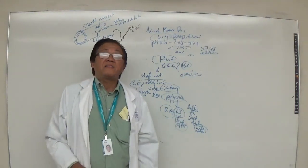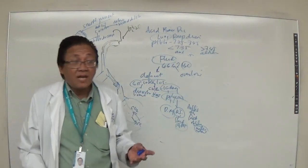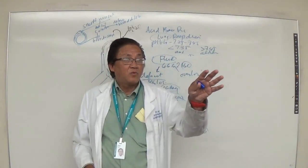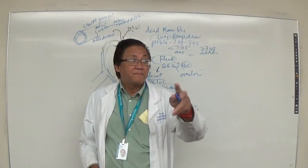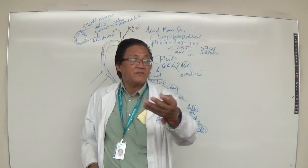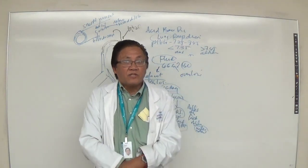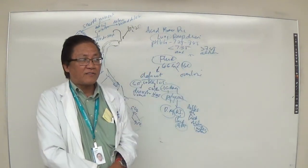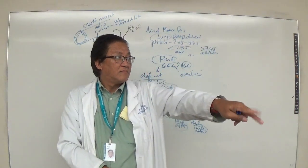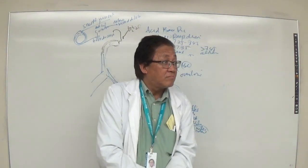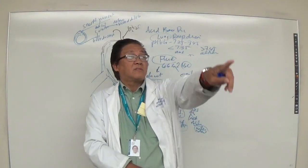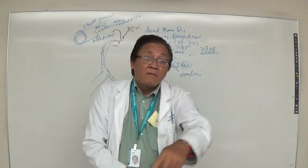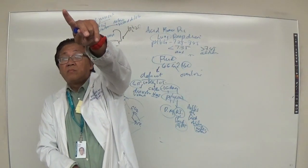Addison's disease involves a lack of aldosterone. Aldosterone promotes water retention — if you lack it, you have polyuria and can develop hypovolemic shock — called an Addisonian crisis. The opposite of Addison's is Cushing's disease, which involves high levels of aldosterone, leading to water retention and elevated blood pressure due to hypervolemia.